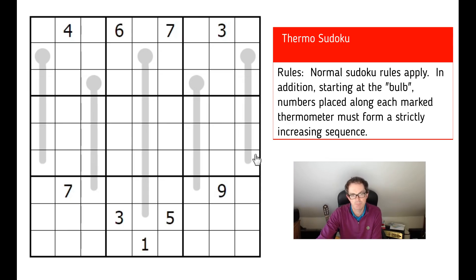It doesn't have to be incremental, so it's not necessary to go 2, 3, 4, 5, 6, 7, 8 in strict order, but it does have to strictly increase. So it could be 2, 4, 6, 8, if there was enough room along the thermometer.